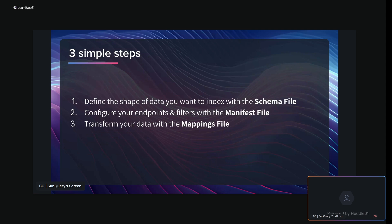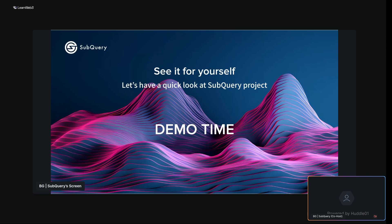There are three simple steps to configure any SubQuery indexer. You'll start with a schema file, which helps you define the shape of data you want to index — essentially your API specification. Then you configure your endpoints and filters in the manifest file, specifying exactly which endpoint you want to query and which data you want to fetch from a specific RPC. The third type are mappings files, which transform the data you just fetched and save it locally, so this data is then accessed via the specification given in the schema file. Mappings files are essentially the connectors between manifest files and schemas.